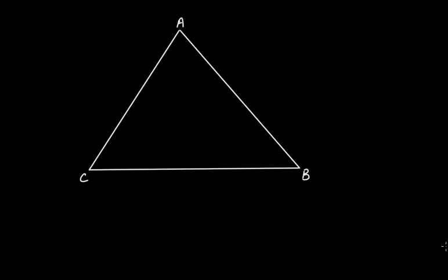What are medians of a triangle? We have triangle ABC with vertices A, B, and C, where all angles — angle A, angle B, and angle C — are acute angles.